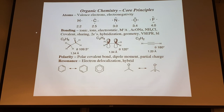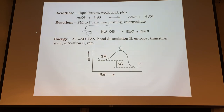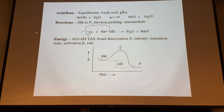A triple bond has two pi bonds plus the sigma. Know where those bonds are - that's fundamental for understanding reactions. Then consider polarity and dipole moments - partial charges affect reactivity. Resonance delocalization is important for intermediates and starting materials. A carbonyl has electrons polarized toward the more electronegative oxygen. The resonance form with a negative oxygen and positive carbon means any nucleophile will want to attack that carbon.